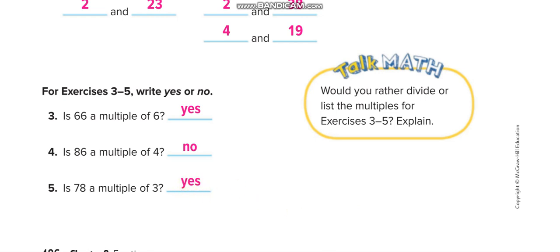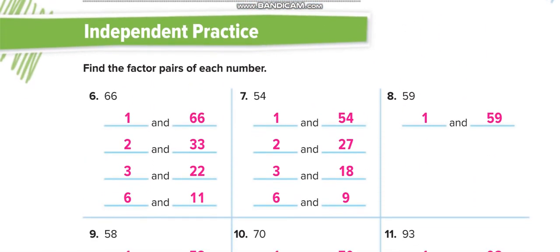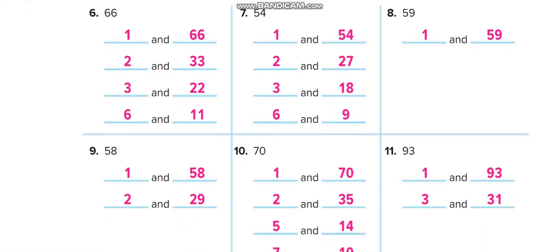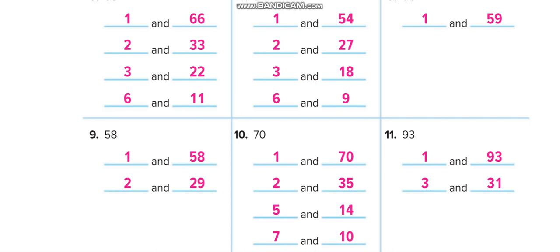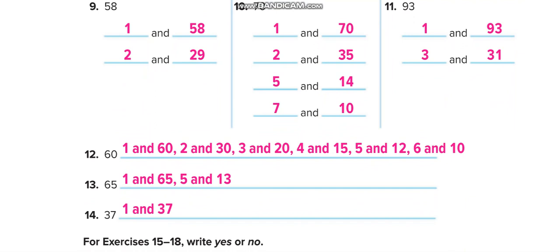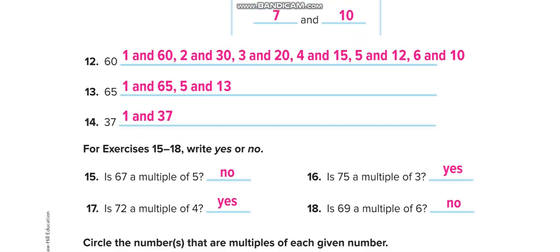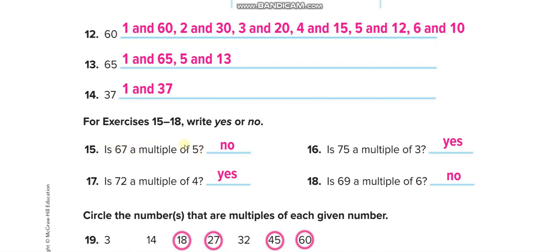On the next page is independent practice — find the factor pairs of all these numbers. First try to find them yourself, then match your answers from this video. They are also finding factor pairs of 60: 1 and 6, 2 and 30. Instead of writing on separate lines they write them in one line. You can also use the multiplication sign. To check multiples, divide and see if there is a remainder — no remainder means yes, it is a multiple.